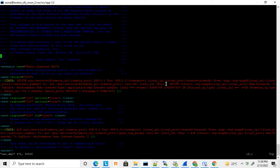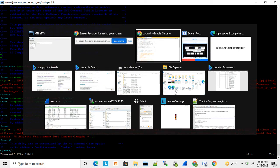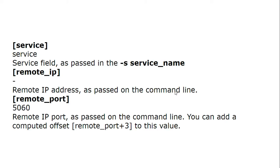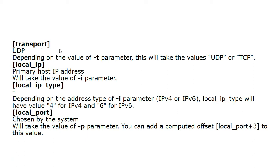I discussed this in earlier videos but I want to clarify a few things clearly here. The first value is service — while starting SIPp, if you pass -s, this will contain the service name or the destination party number you want to test. You pass -s then the number and it will automatically replace the service variable. Similarly, remote IP and remote port: you put the remote IP colon port and that replaces the remote party IP and port. For transport, you use -t and put the value like UDP or TCP.